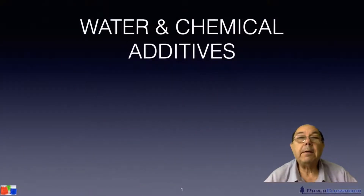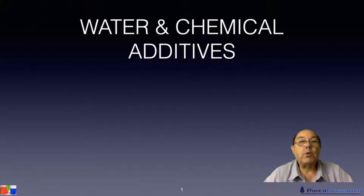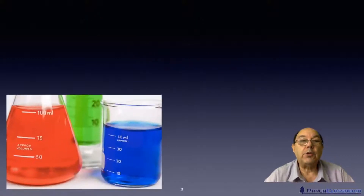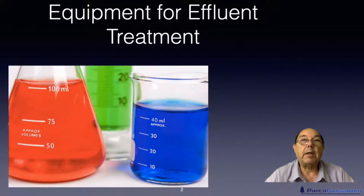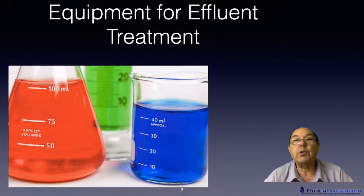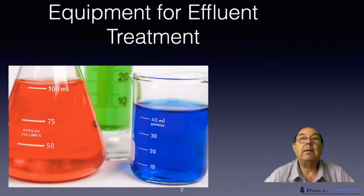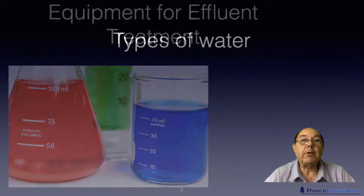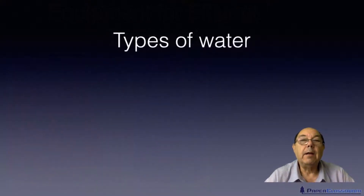Hi, I'm Steve Mann and this is Paper Classroom. Welcome to one of our water and chemical additives tutorials. In this particular tutorial I'm going to be talking about equipment that's used on the effluent side of the water cycle. I'm going to start off, as I've done in the past, by just mentioning the three different types of water that we have in the process.